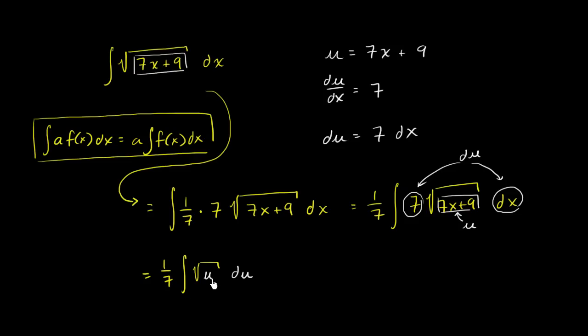And we can rewrite this, if we want, as u to the 1 half power. It makes it a little bit easier for us to kind of do the reverse power rule here. So we can rewrite this as equal to 1 seventh times the integral of u to the 1 half power du. And let me just make it clear. This u I could have written in white if I wanted the same color, and this du is the same du right over here.